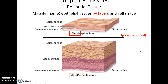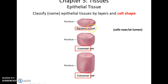Epithelial tissue is classified by layers of cells and by cell shape. By layers: a single layer is called simple epithelium; if it's a single layer but looks like it could be more than one, it's pseudostratified; and if it's clearly two or more layers, it's stratified. By cell shape: if the cells near the surface are flat, it is squamous; if they are the same height as they are wide, they are cuboidal; and if they are much taller than they are wide, they are columnar.